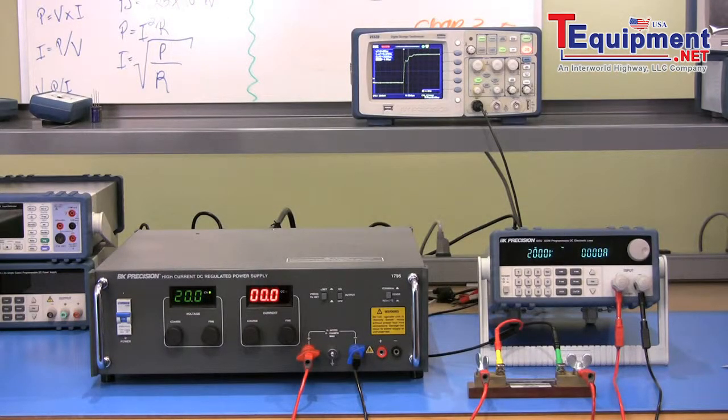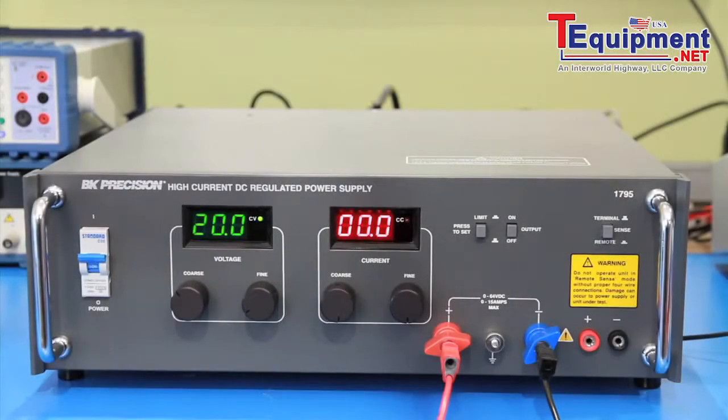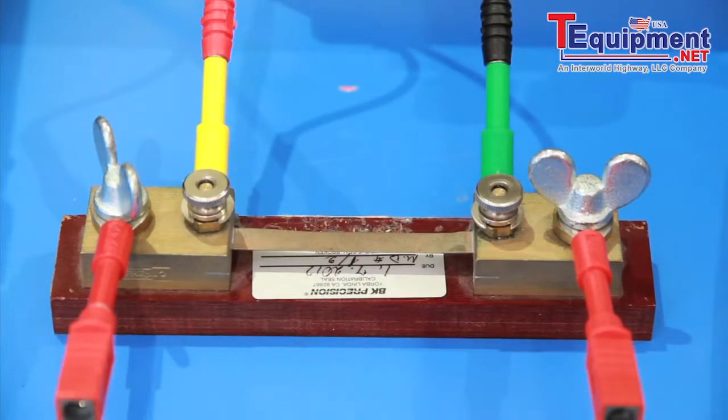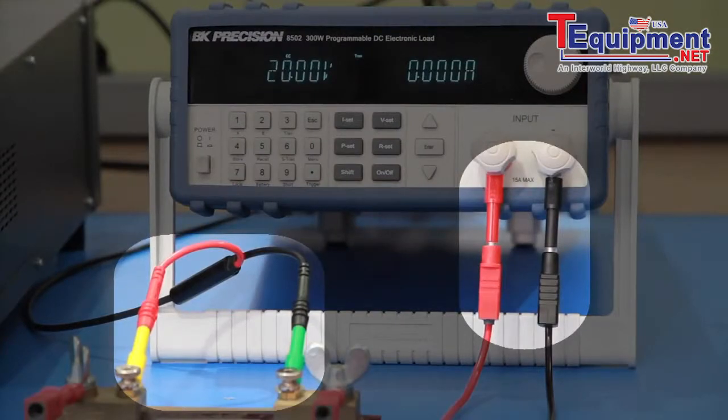In order to measure slew rate of a DC load, you need to have the following: a DC load, a power supply capable of producing the maximum current that can be drawn by the load, a shunt resistor, a digital storage oscilloscope, and test leads that can handle the maximum current to be drawn.